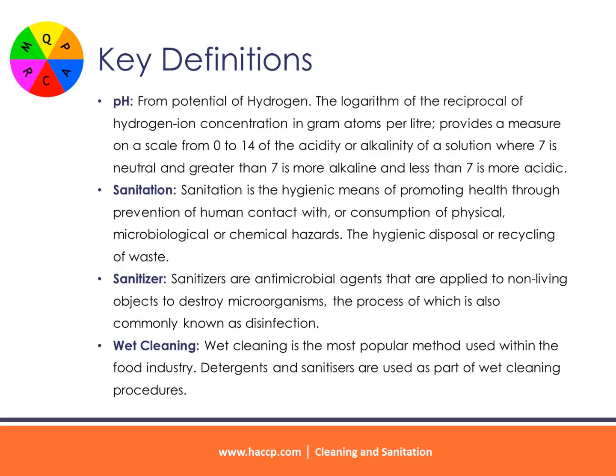pH, from potential of hydrogen: the logarithm of the reciprocal of hydrogen ion concentration in gram atoms per liter. This provides a measure on a scale from 0 to 14 of the acidity or alkalinity of a solution, where 7 is neutral, greater than 7 is more alkaline, and less than 7 is more acidic.